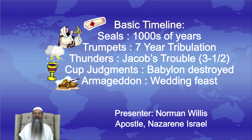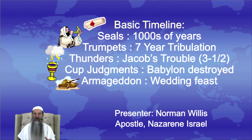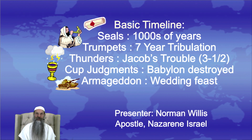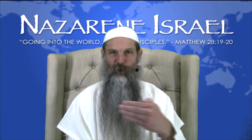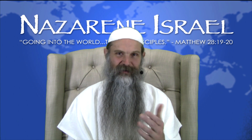The seals play out over thousands of years. The trumpets correspond to what we believe is a seven-year tribulation, and the second half of that is known as the time of Jacob's trouble — an extreme time of difficulty in the land of Israel and abroad. These correspond to the seven thunders, which are presently sealed up. After Babylon is judged at the seventh trumpet, the cup judgments are poured out and Babylon is destroyed. There's then a final battle — Armageddon — which, as we'll see later, is also the wedding feast.